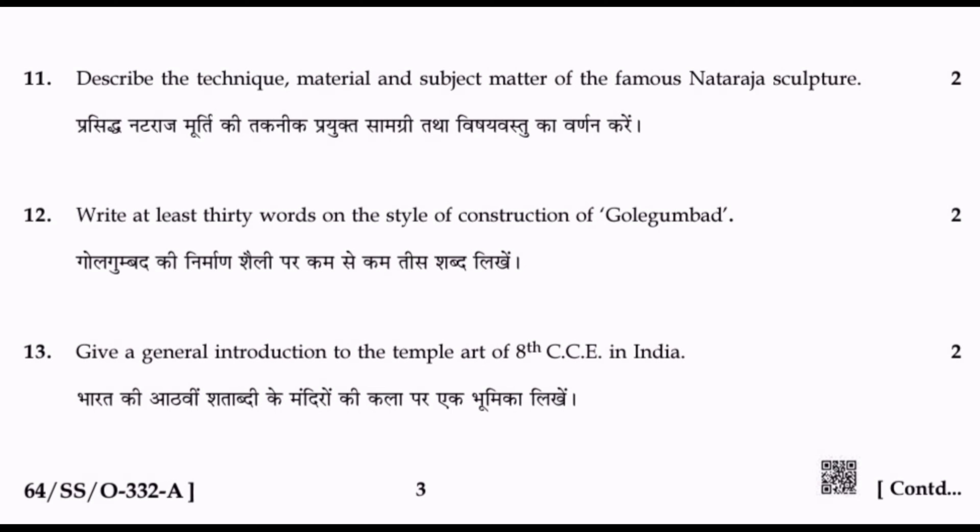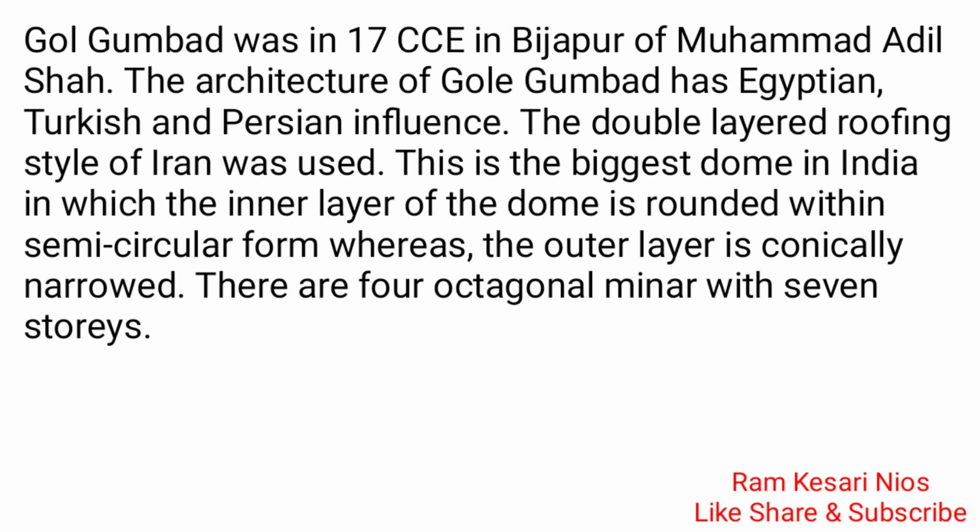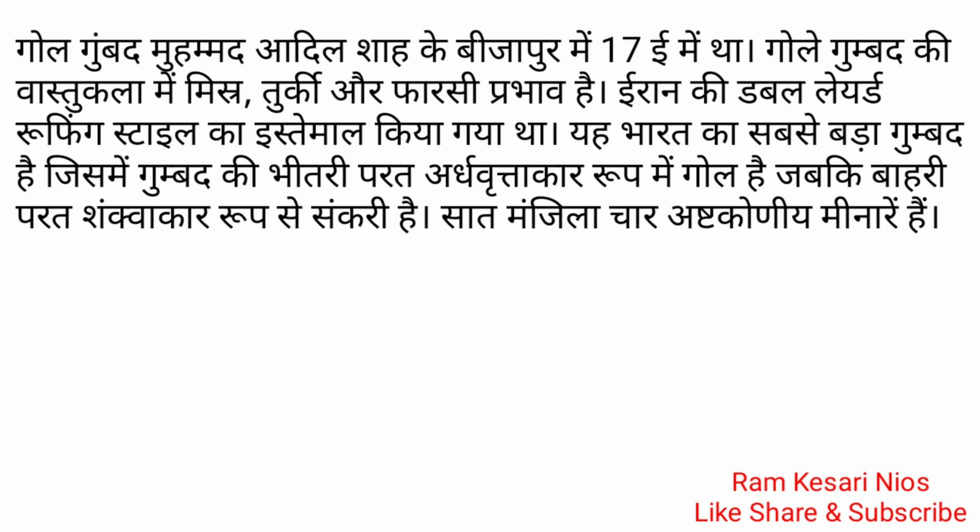Question 12: Write at least 30 words on the style of construction of Golgumbad. Golgumbad was built in the 17th century in Bijapur by Muhammad Adil Shah. The architecture has Egyptian, Turkish and Persian influence. The double-layered roofing style of Iran was used. This is the biggest dome in India, in which the inner layer is rounded in a semi-circular form while the outer layer is conically narrowed. There are four octagonal minarets with seven stories.